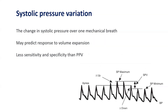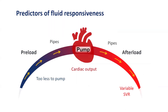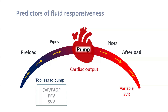Systolic pressure variation, which indicates the change in systolic pressure over one mechanical breath, may also predict response to volume expansion. We can use static variables like central venous pressure or dynamic variables like pulse pressure variation and stroke volume variation to predict fluid responsiveness.